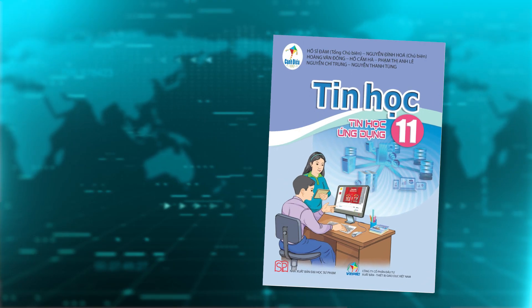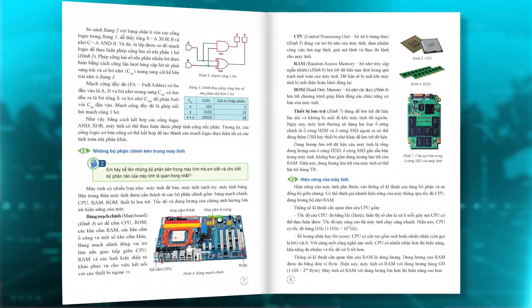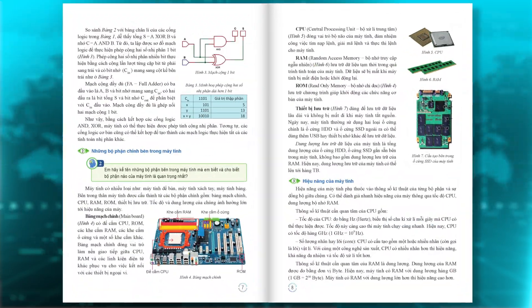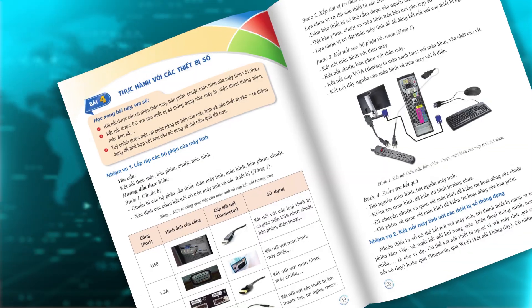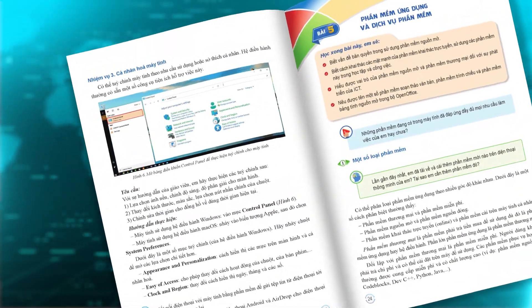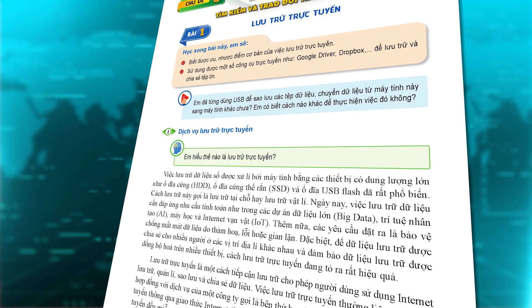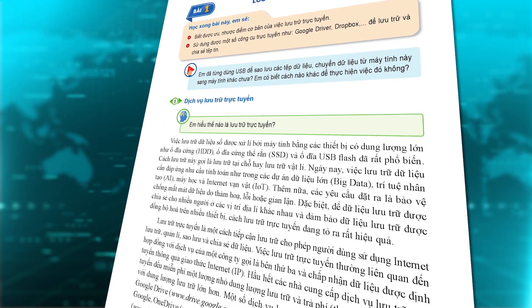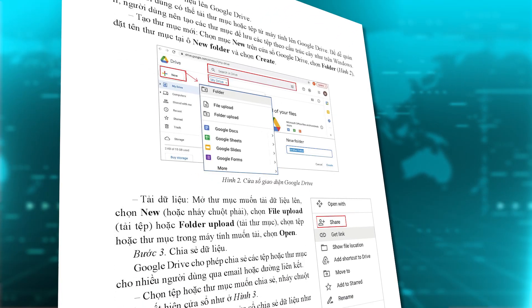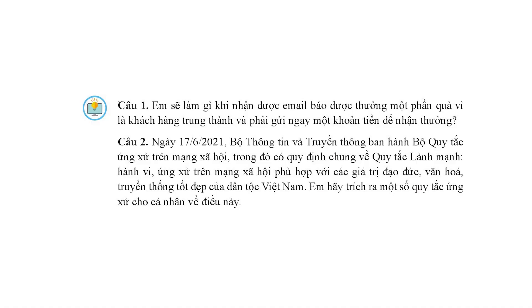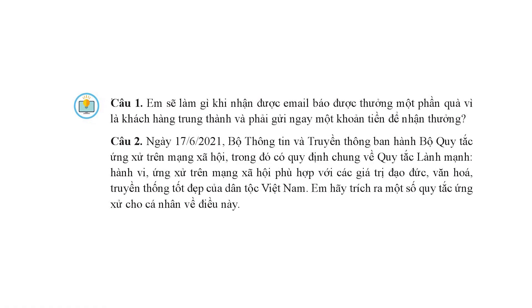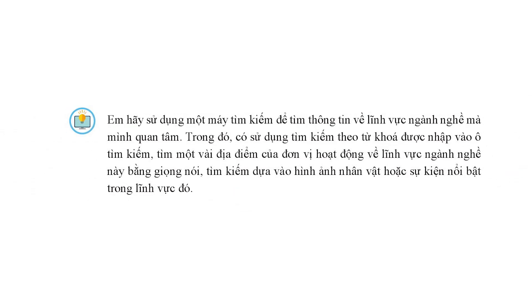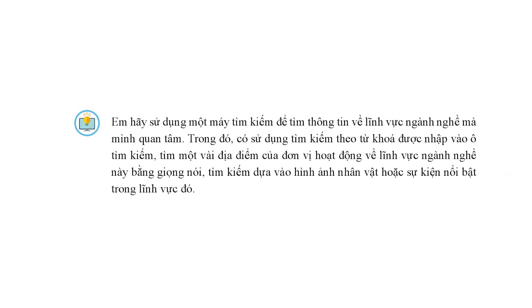Sách giáo khoa tin học 11 được biên soạn theo định hướng phát triển năng lực, thông qua các hoạt động dạy và học. Bài học là một chuỗi hoạt động: khởi động nêu vấn đề, hình thành kiến thức, luyện tập, trả lời câu hỏi, tóm tắt bài học. Các hoạt động học tập gắn với thực tiễn, kiến thức được liên hệ với thực tế, học sinh khám phá kiến thức một cách tự nhiên. Mỗi bài học đều có một vận dụng yêu cầu học sinh giải quyết một vấn đề trong bối cảnh thực tế.